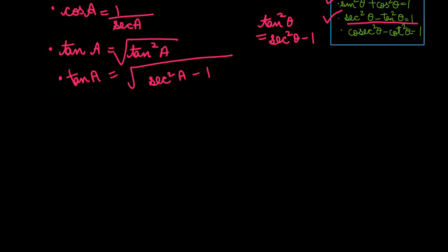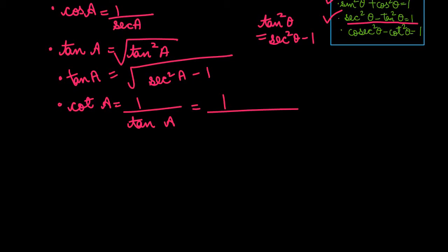Next is cot A. Cot A = 1/tan A, and we already found tan A in terms of sec A. So cot A = 1 / √(sec²A − 1).